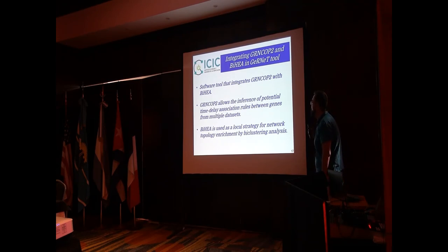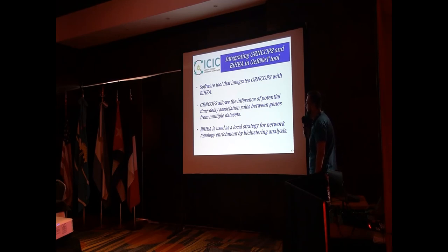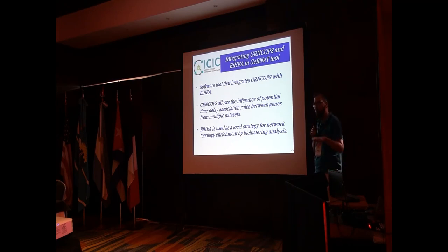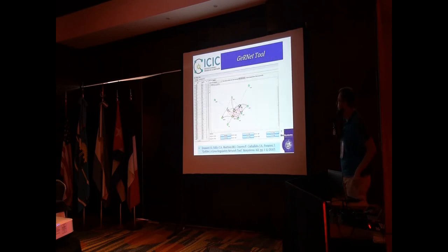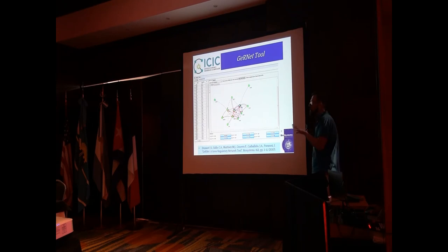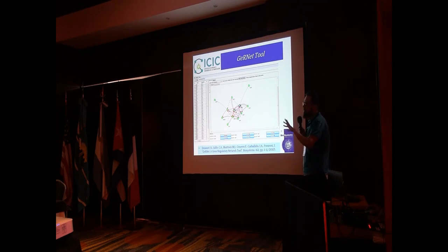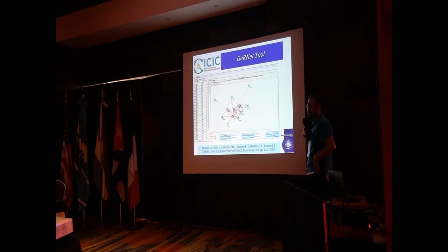We also developed a tool for biclustering analysis of gene expression data with different kinds of visualizations. We then worked on integrating GRN-COP2 and the biclustering tool into a new software called HerNet. The idea of this integration is to use biclustering as a strategy for local enrichment of the topology obtained by GRN-COP2 — when you identify a subnetwork of interest you can select that substructure and apply biclustering analysis to detect additional associations in that part of the network.